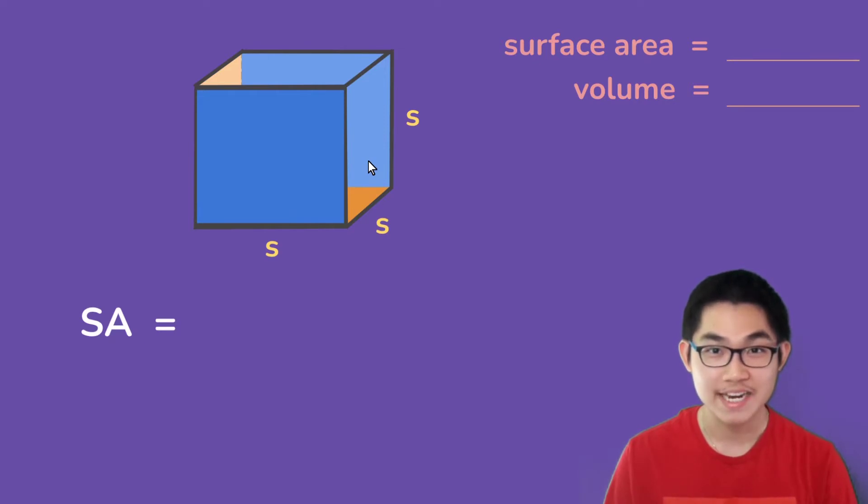Now what is the area of one square? If you watch my previous video, you know that the area of one square is s to the power of two, and since there are six sides or six squares, the surface area is six times s to the power of two.